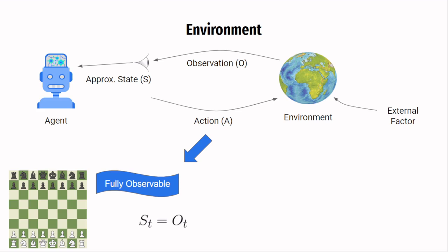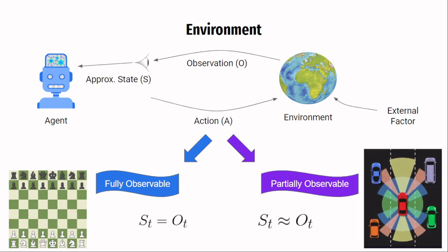Environments where the agent cannot completely make out the state of the environment from the observation are called partially observable environments. Examples are typical real world problems like driving a car where the agent can only make out what its cameras can see and nothing beyond it.